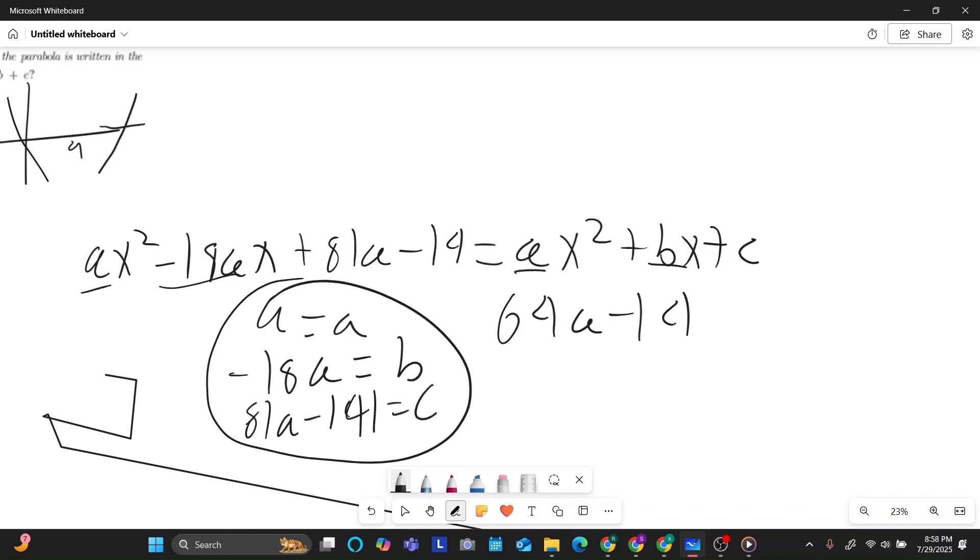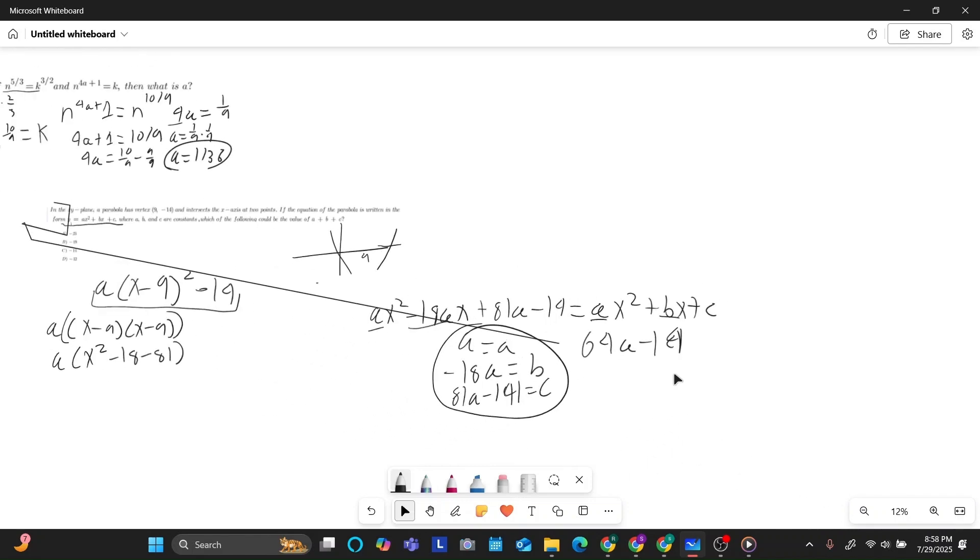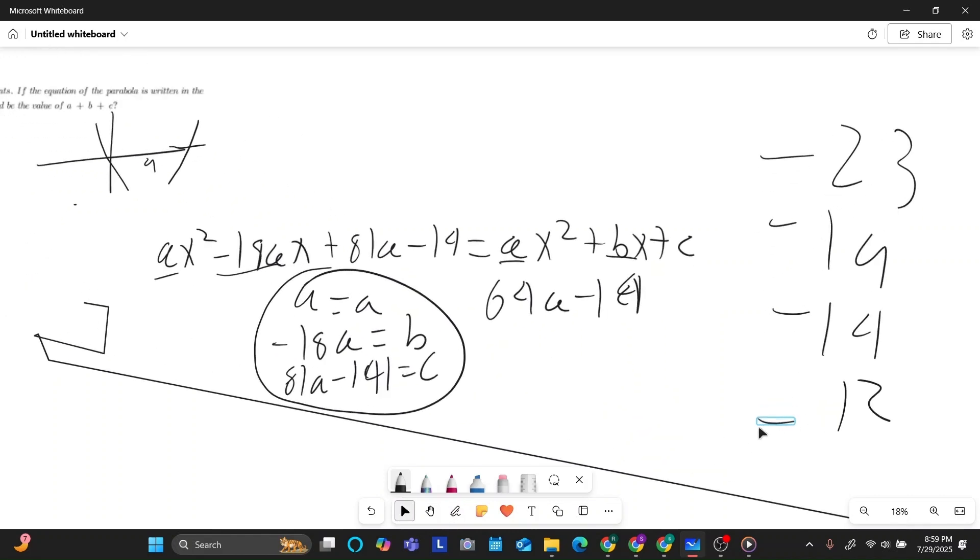So now we know that the value of a plus b plus c depends on whatever a is. And we're told that the parabola intersects the x-axis at two points. So it opens upward and therefore a must be greater than zero. So if I'm to look at all these answer choices, they're all negative, right? And so what I can do is I can actually set 64a minus 14 equal to all of them. And then wherever a is negative or not positive, I can just cross those answer choices out. So if I was to look back at the answer choices, it's negative 23, negative 19, negative 14, and negative 12.